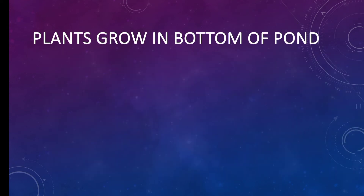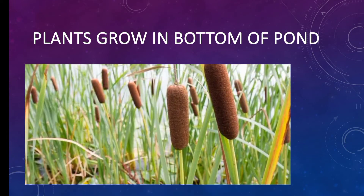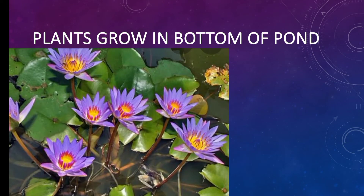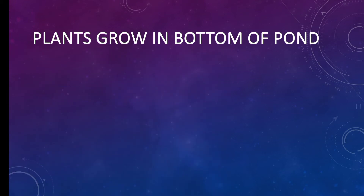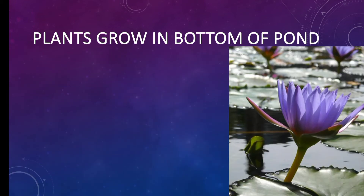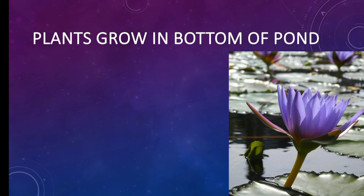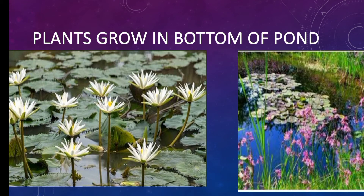Some plants grow at the bottom of the pond. This is called cattails — it grows from the bottom of the pond. These are water lilies, and this one is water hyacinth. Here we have some pictures of water plants which are grown from the bottom of the pond.